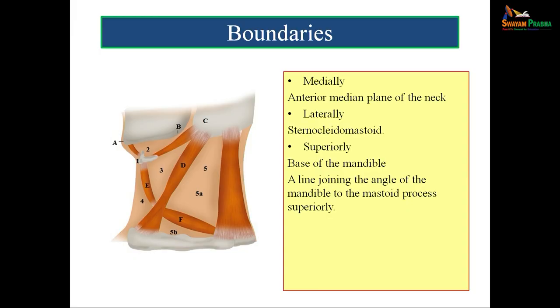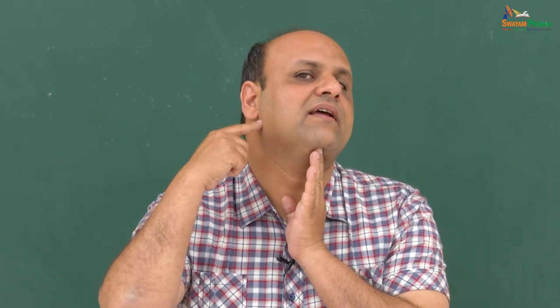The boundaries of the anterior triangle are: medially, the anterior median plane of the neck; laterally, the sternocleidomastoid; and superiorly, the base of the mandible and the line joining the angle of the mandible to the mastoid process. In the slide, D represents the sternocleidomastoid, A-B is the base of the mandible, and B-C is the line from the angle of the mandible to the mastoid process.